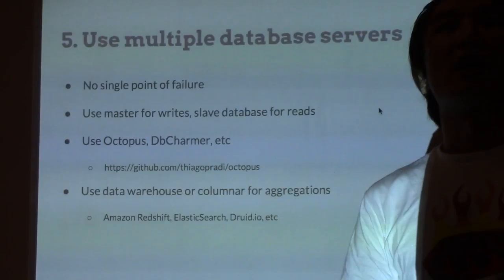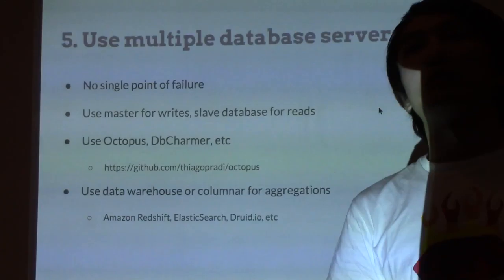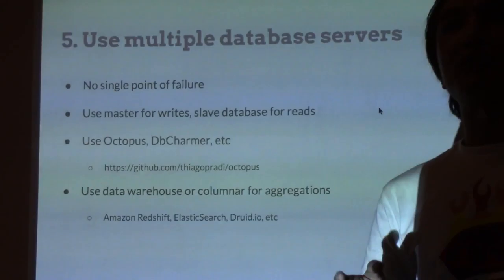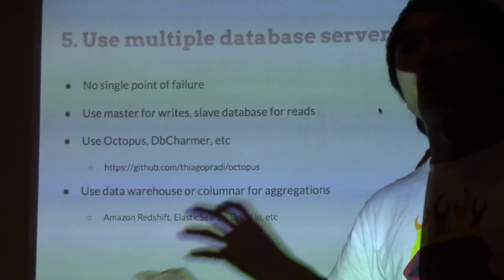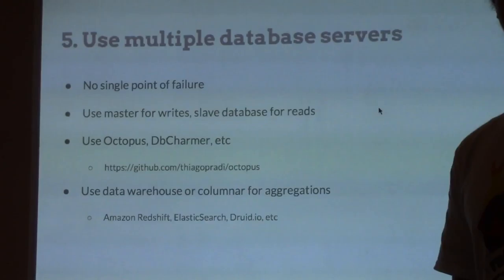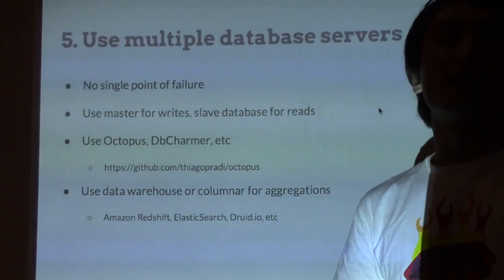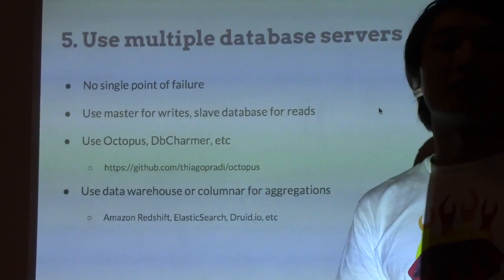There are a number of options out there. Many people use Elasticsearch — that's fine — but be careful that when you do that, you enforce a lot of ETL process, which means extract, transform, and load: taking a bunch of data and putting it in another data store. But Rails and DB Charmer can also allow you to access those databases and run queries against those data stores.